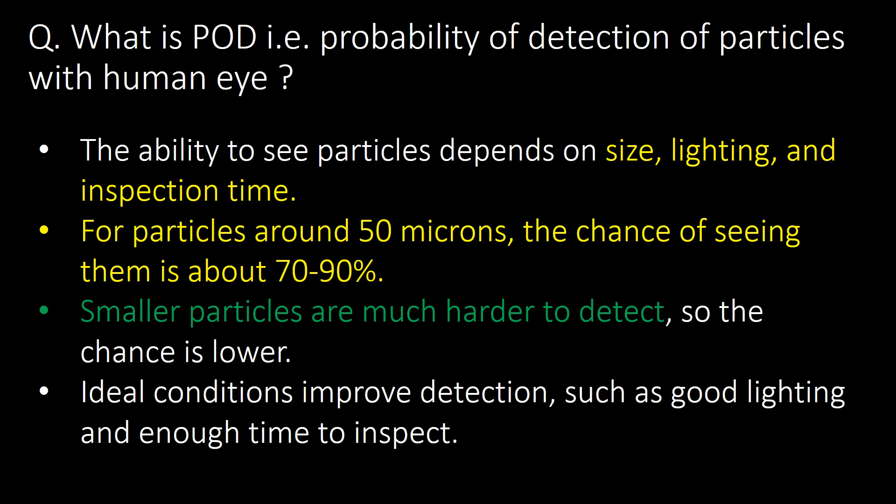What is POD — probability of detection — of particles with the human eye? The ability to see particles depends on size, lighting, and inspection time. For particles around 50 microns, the chance of detecting them is about 70 to 90 percent. Smaller particles are much harder to detect.